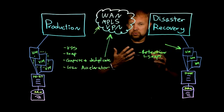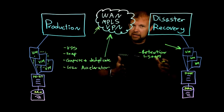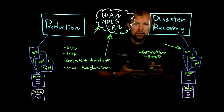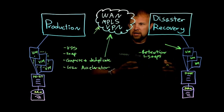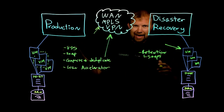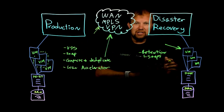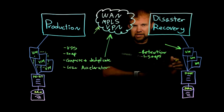You probably don't need 28 snapshots on a VM, but it gives you a nice buffer if you want to create a few restore points with your replicas. That way, if something happens at production and you don't catch it in time and still need to fail over, you can fail over to a previous point in that replication chain.